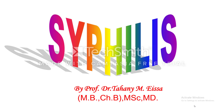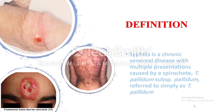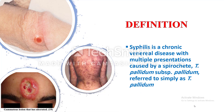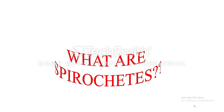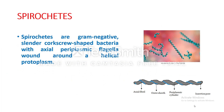We are talking about syphilis. Syphilis is a chronic venereal disease with multiple presentations caused by the spirochete Treponema pallidum subspecies pallidum, referred to simply as Treponema pallidum or T. pallidum. Spirochetes are gram-negative, slender, corkscrew-shaped bacteria with axial periplasmic flagella that wind around the helical protoplast.